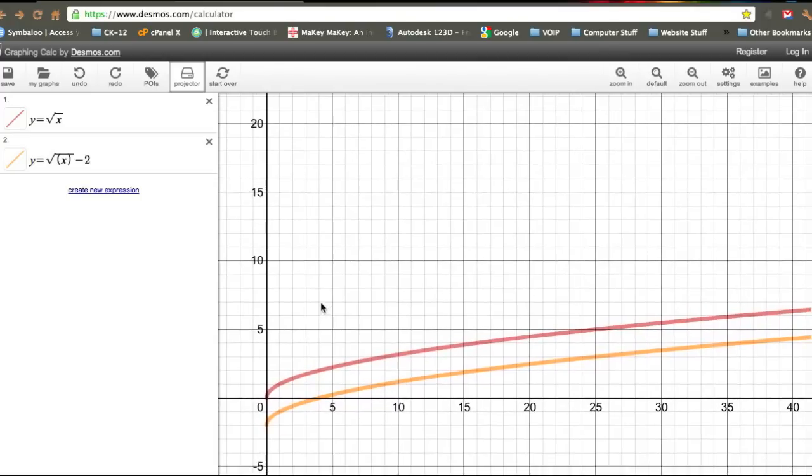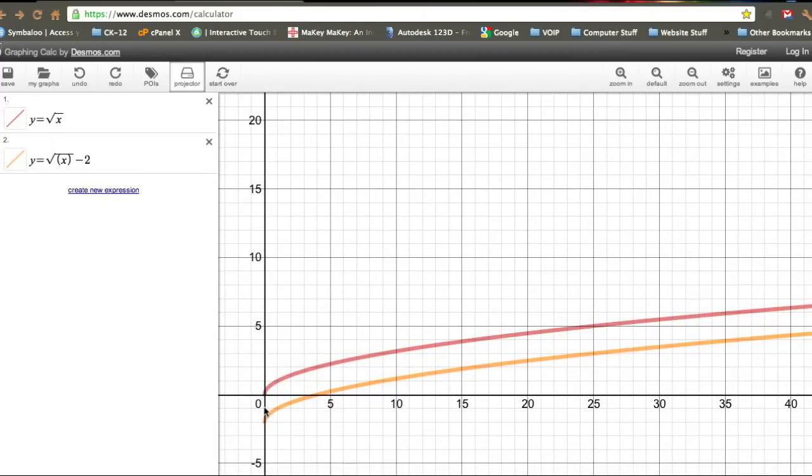Now our graph moves down. Let me move the picture up here a little bit. Now our graph moves down two units. So a vertical change occurs. And now it occurs a little more the way you might expect. Since I've subtracted a value from it, my graph goes down. And we think of negative as being down. So that works a little better. The left and right one seems backwards,